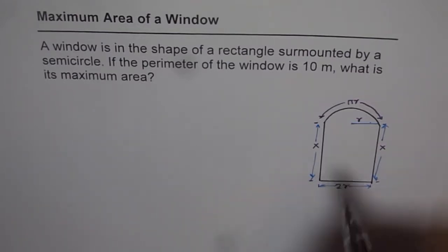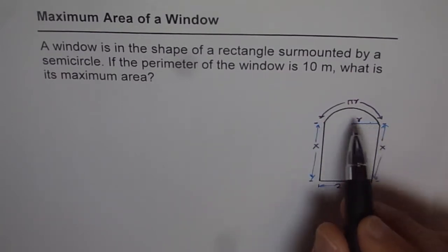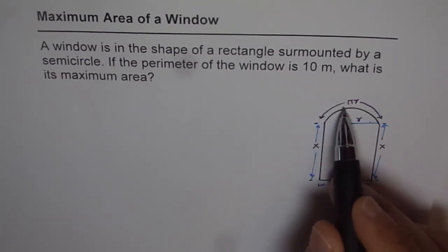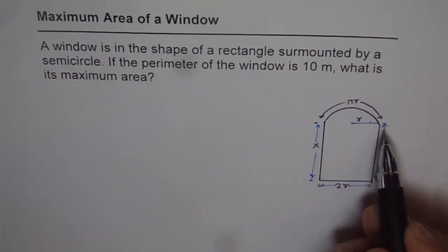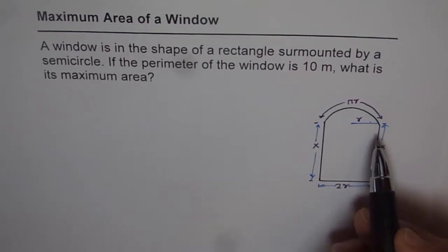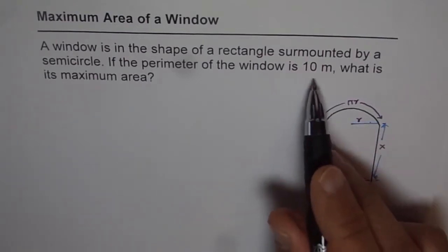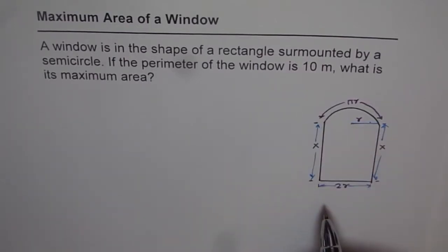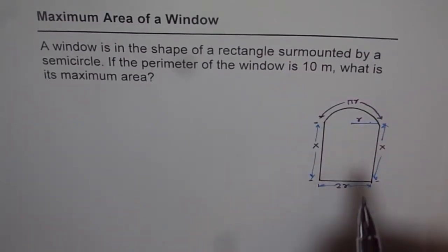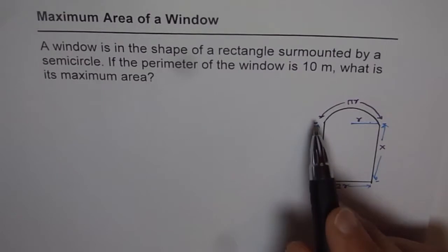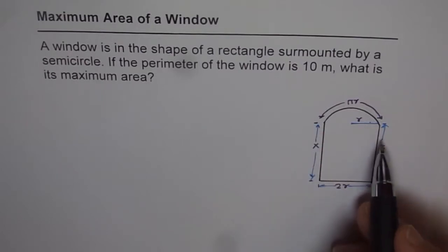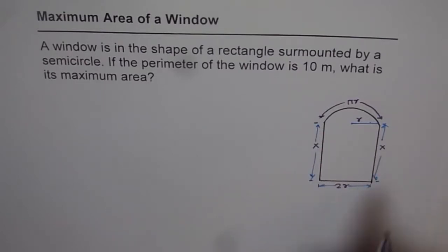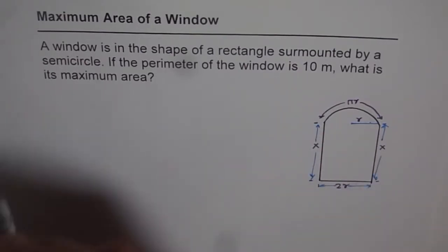This is our window — a rectangular portion with a semicircle on the top. The perimeter is given to us, which is 10 meters, and we need to find the maximum area of this window. So let's start with finding the maximum area.